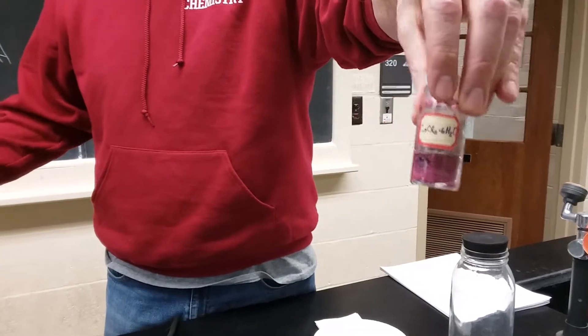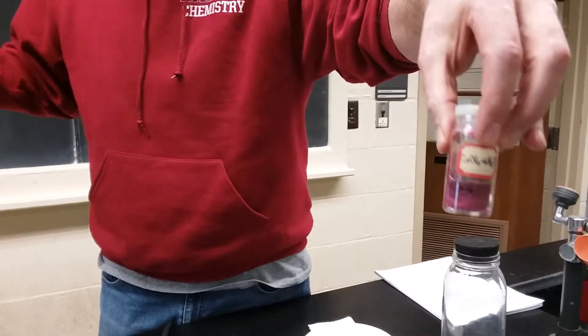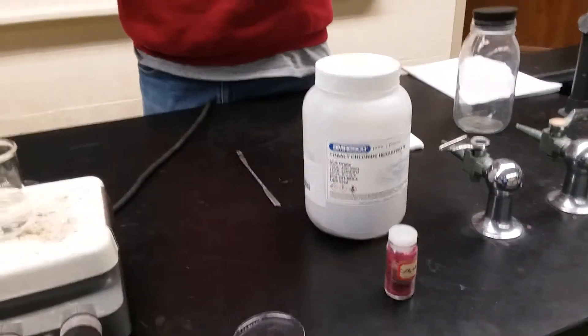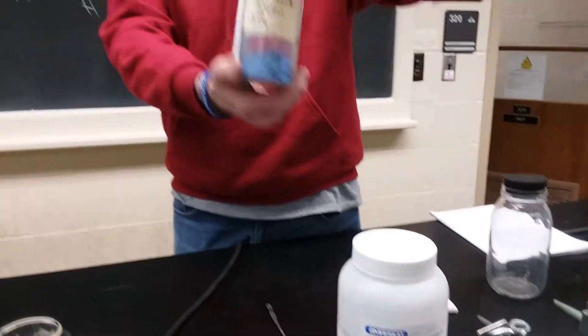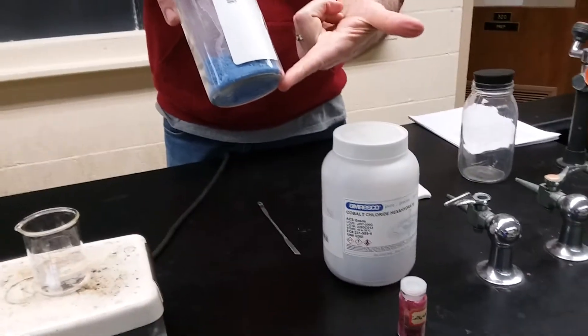I didn't dehydrate this one like I did before because we have a jar of it. This is anhydrous cobalt chloride. You can already see, it's blue when it doesn't have the water. It's purple when it has the water.